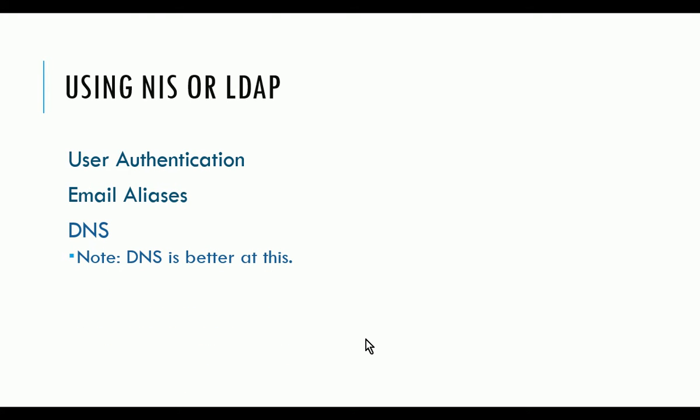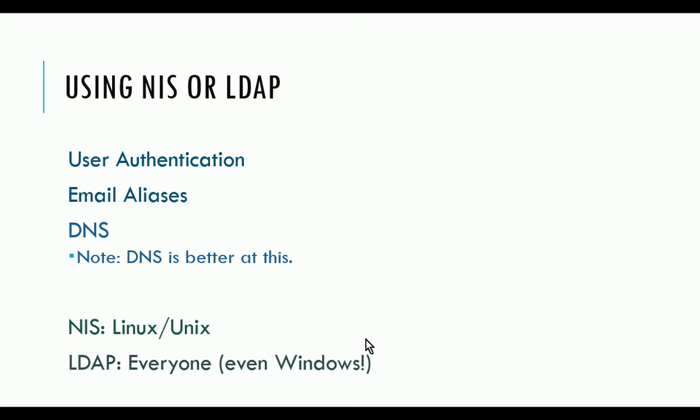NIS only works in Linux and Unix. So you cannot use NIS if you're planning on integrating with a Windows network. If you have Microsoft Windows servers and want to integrate with Active Directory, NIS is not going to be a good option. However, something like LDAP would be a good option because it's supported by just about everything — it's an open standard. A lot of components you find in Active Directory will look familiar when we talk about LDAP, and Active Directory is compatible with LDAP. You can enable LDAP support on an Active Directory server so that we can query using LDAP from a Linux machine.